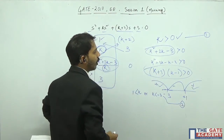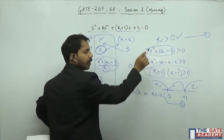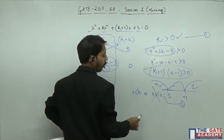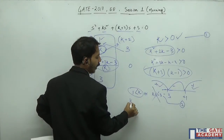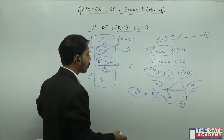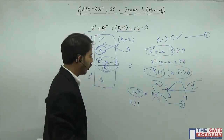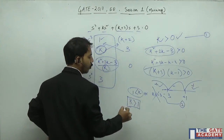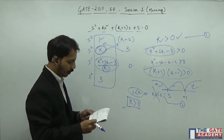Now we take the intersection of both conditions. The first condition says k > 0, and the second says k > 1 or k < −3. Since k must be positive, the condition k < −3 is eliminated. The intersection gives k > 1. So the final answer is k > 1.